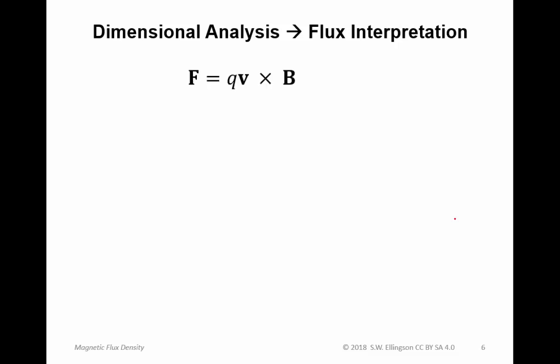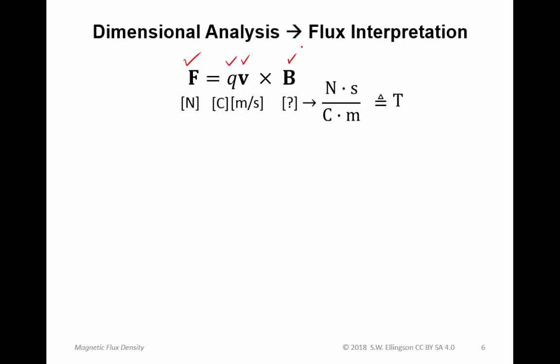The equation force equals charge times velocity cross magnetic flux density is a defining relationship for B. What are the units of B? Units of force are newtons, charge is coulombs, velocity is meters per second. Solving for the units of B gives newton-seconds per coulomb-meter — pretty strange-looking units. We come up with a shorthand: the SI unit is T, which stands for Tesla. So one Tesla is one newton-second per coulomb-meter.